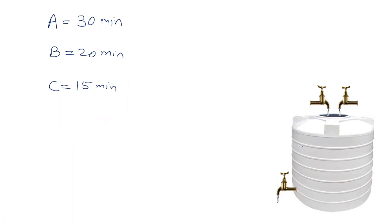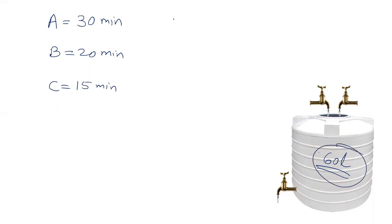We are assuming the capacity of this tank is 60 liters. Why 60 liters? Because the LCM of 30, 20, and 15 is 60. When you divide this capacity by 30, 20, or 15, you will get an integer value — that is why I have used 60 liters.